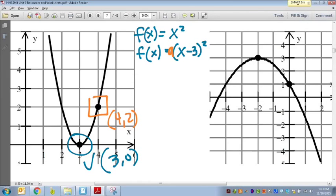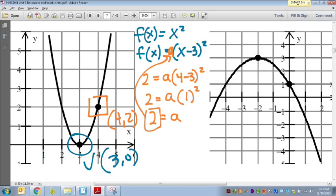So I'm going to plug in 2 equals a times 4 minus 3 squared. That's going to give me 4 minus 3 is 1, 1 squared is 1, so really a equals 2. So 2 is what goes in front of my parentheses there, so my final equation is f of x equals 2 times x minus 3 squared.